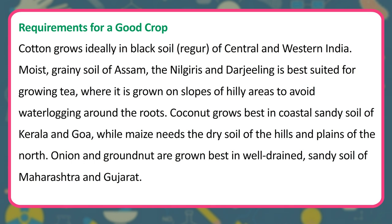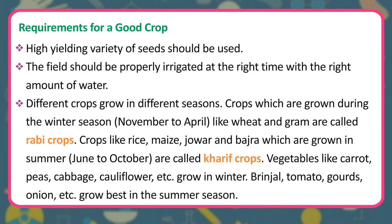Cotton grows ideally in black soil (Regur) of Central and Western India. Moist, grainy soil of Assam, the Nilgiris, and the Arjilingis is best suited for growing tea, which is grown on slopes of hilly areas to avoid waterlogging. Coconut grows best in coastal sandy soil of Kerala and Goa, while onion and groundnut grow best in well-drained sandy soil of Maharashtra and Gujarat. High-yielding variety of seeds should be used, and fields should be properly irrigated. Crops which are grown during the winter season (November to April), like wheat and gram, are called Rabi crops. Crops like rice, maize, jowar and bajra grown in summer (June to October) are called Kharif crops.